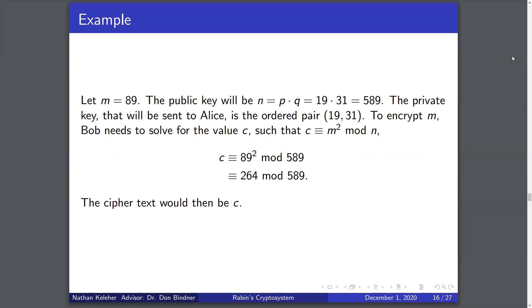In order to encrypt m, Bob needs to solve for the value C such that C ≡ m² mod N, also verifying that m is less than N. So C ≡ 89² mod 589, which is equivalent to 264 mod 589. The ciphertext will then be C = 264.